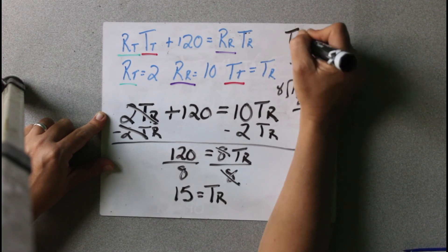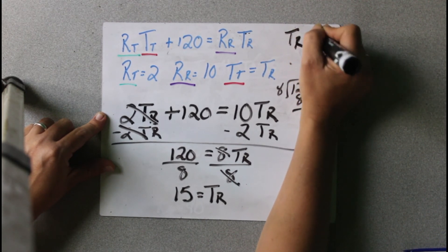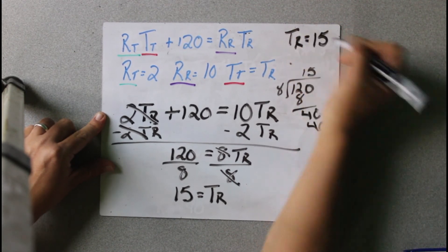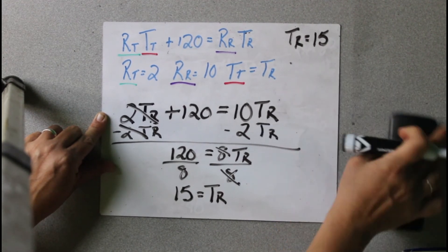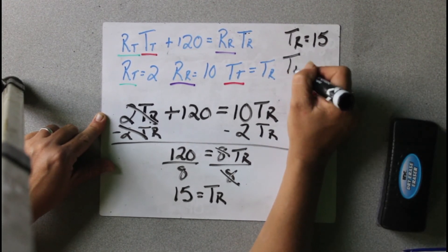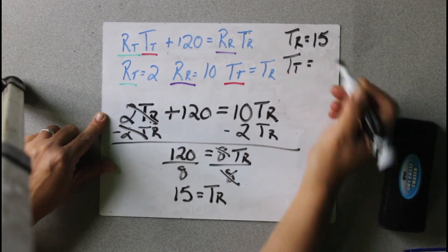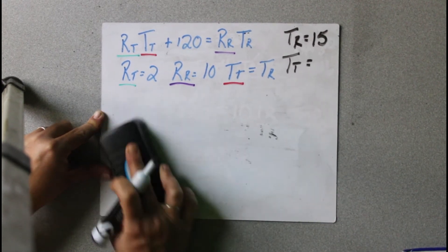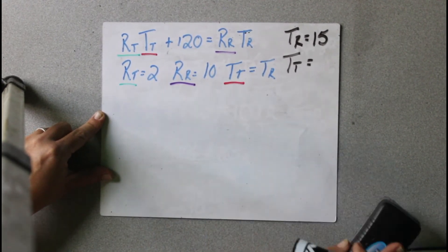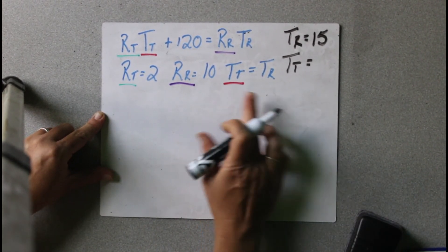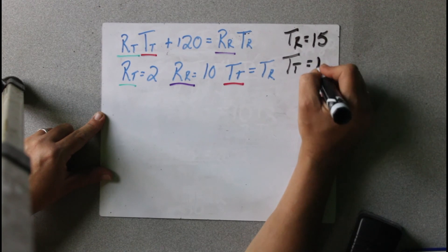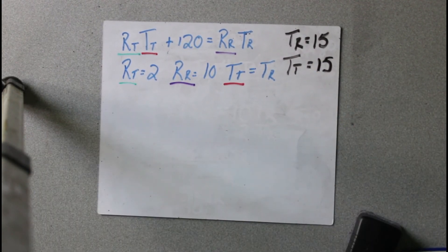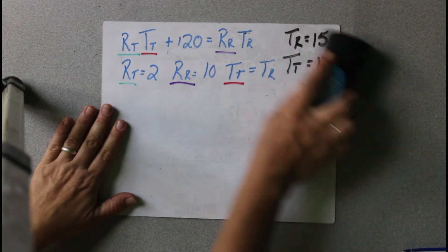TR equals 15. And it said to solve for TR and TT. So TR equals 15. Now we also have to solve for TT. We go back to one of the given equations: TT equals TR. So that's easy — TT is 15 as well.